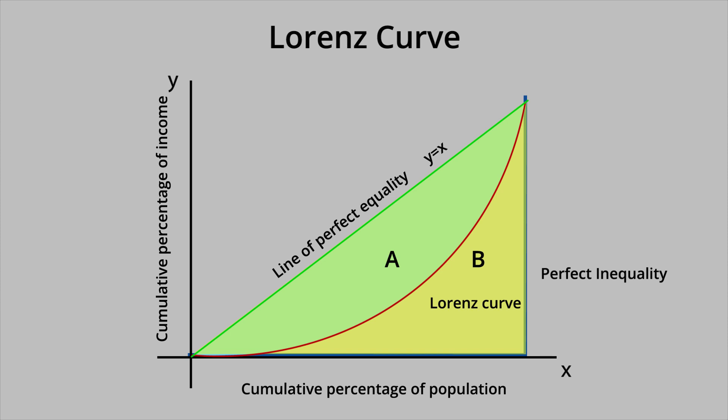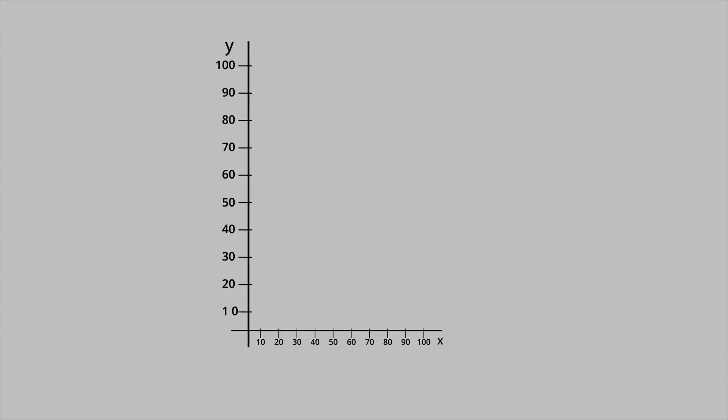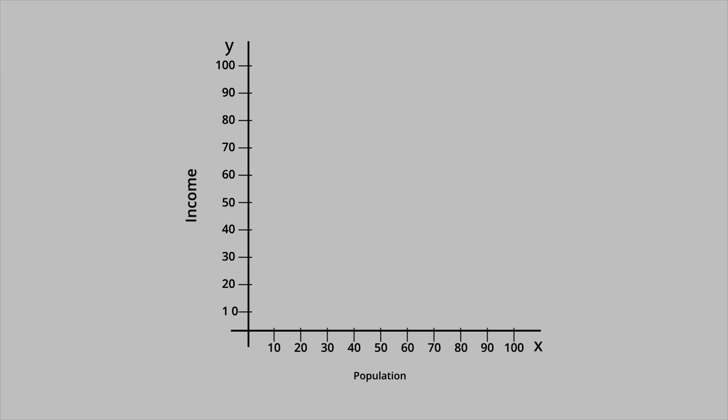It is also often described as a percentage, ranging from 0 to 100%. If the sample includes negative incomes, the Gini Coefficient could be greater than 1, but this is not common. The line x equals y, with a slope of 1, represents perfect equality, because it shows that each percentage of the population controls that exact percentage of income.